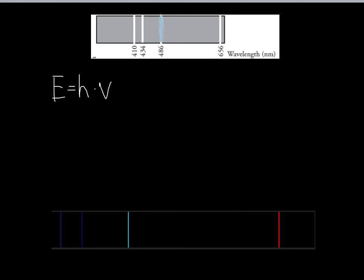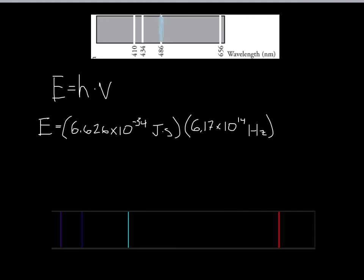Always make sure you use frequency on this equation, not the wavelength. Sometimes you might need to convert wavelength to frequency first, as we just did. Planck's constant is 6.626 times 10 to the negative 34 joule seconds, and we can plug that number right in. Energy equals Planck's constant multiplied by the frequency we found in the previous slide: 6.17 times 10 to the 14th. Plug that into your calculator.